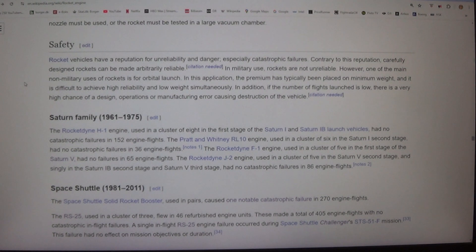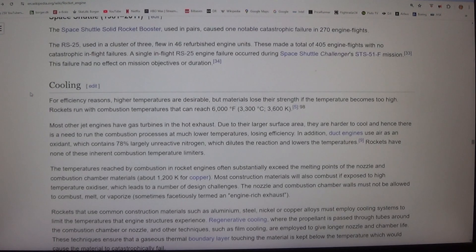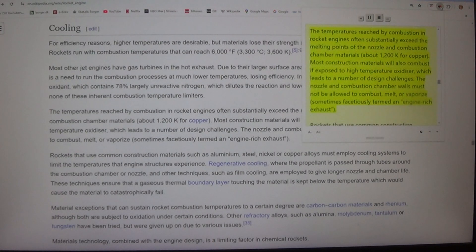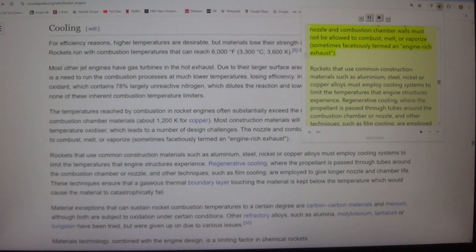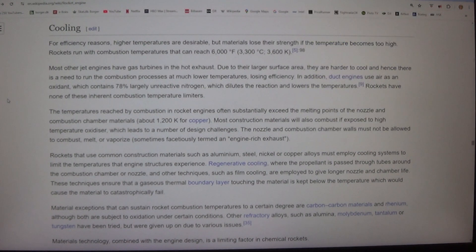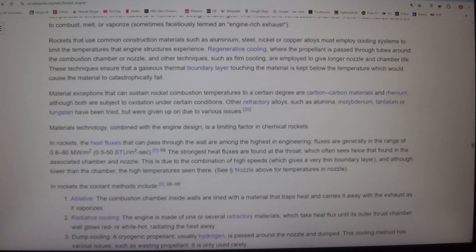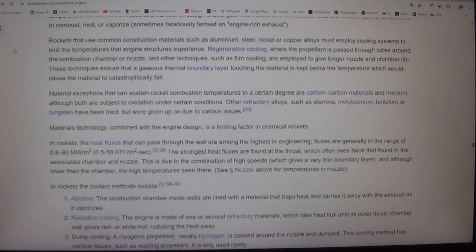The temperatures reached by combustion in rocket engines often substantially exceed the melting points of the nozzle and combustion chamber materials, about 1,200 K for copper. Most construction materials will also combust if exposed to high temperature oxidizer, which leads to a number of design challenges. The nozzle and combustion chamber walls must not be allowed to combust, melt, or vaporize, sometimes facetiously termed an engine-rich exhaust.